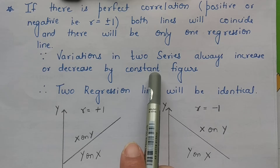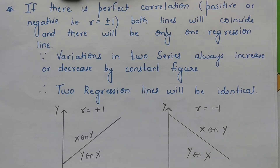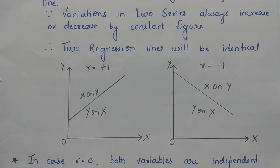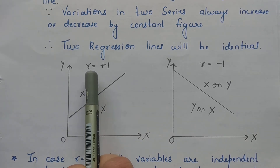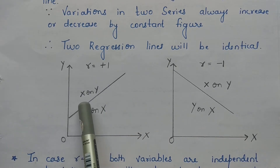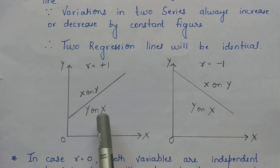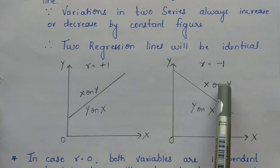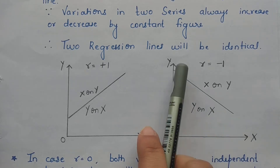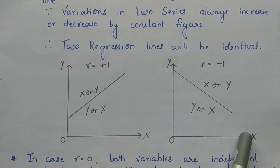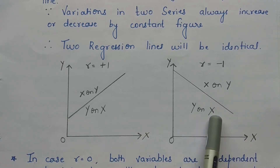The two series will always increase and decrease by a constant figure; therefore, the two regression lines will be identical. If your correlation equals perfect positive one, then your two regression lines — x on y and y on x — will coincide into one upward-sloping line. And if the relationship is perfect negative correlation, then your regression line will slope downwards, and again x on y and y on x will coincide.